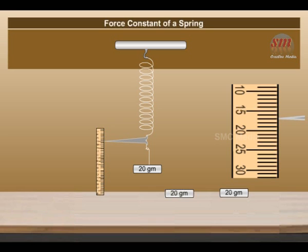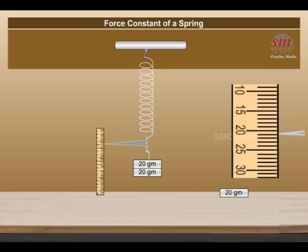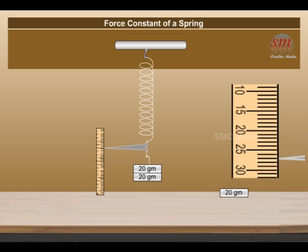5. Gently add a 20 gram slotted weight to the hanger. The pointer tip moves down. 6. Wait for few minutes till the pointer tip comes to rest. Repeat step 4.